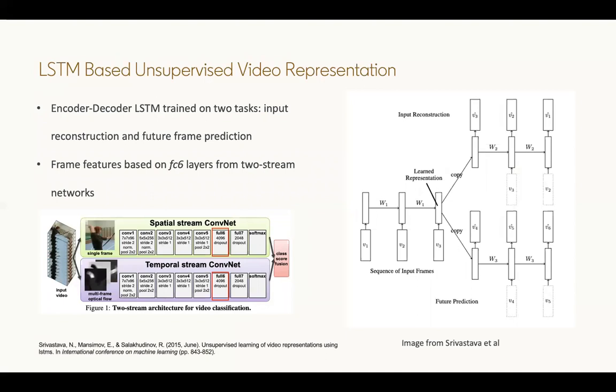Another technique for video representation leverages an unsupervised training criterion based on encoder-decoder LSTM networks. The network is trained for input reconstruction and future frame prediction. The actual frame features used come from the FC6 layer from the two-stream network, as highlighted in the left diagram. The encoder LSTM network takes each frame representation for each time step as input, and the final hidden representation of the encoder is used as input to the two decoders. One of the decoders is input reconstruction, which is trying to reconstruct your input frame representations that were inserted into the encoder. The future frame prediction is meant to now output future frame representations based on the input clip you've entered for the video.